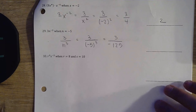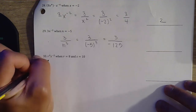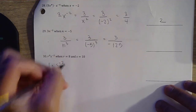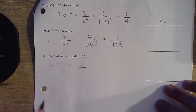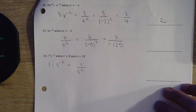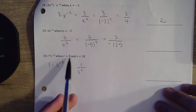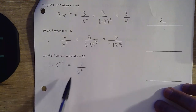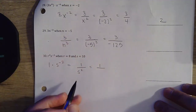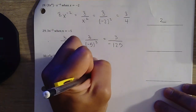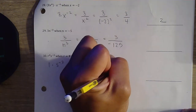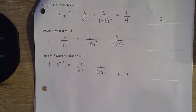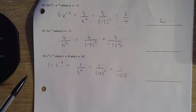Question number 30. r to the 0 power — we know that's just going to be 1. s to the negative 2 — negative exponents, we just bring it down. So in our numerator we'll just have 1, denominator s squared. They tell us r is equal to 8, but that just disappeared — 8 to the 0 power is just 1. s is equal to 10, so 1 over 10 squared — that's going to be equal to 1 over 100. That is our final answer. Thank you guys for watching, I will see you guys on Wednesday.